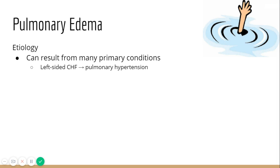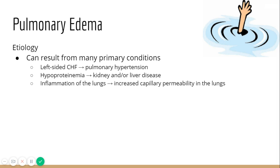Left-sided congestive heart failure backs up fluid within the lung tissue and creates high blood pressure within that circulation. Hypoproteinemia — low protein levels in the blood — can happen with kidney or liver disorders. Inflammation of the lung increases capillary permeability, leading to lots of fluid accumulating in the lungs. Pulmonary hypertension can also occur from causes other than just left-sided heart failure.